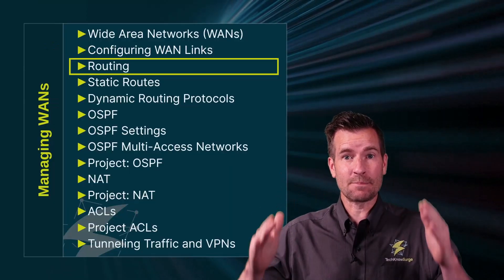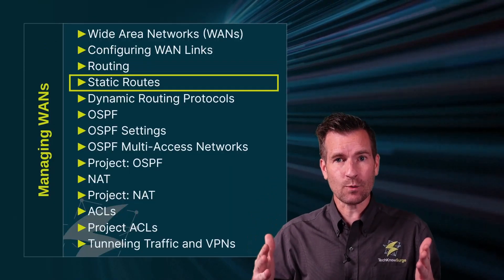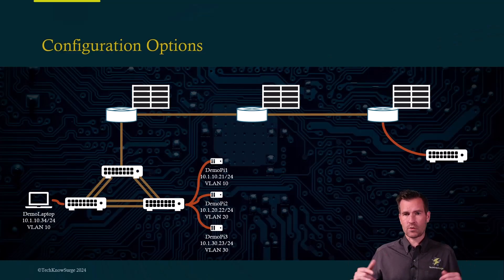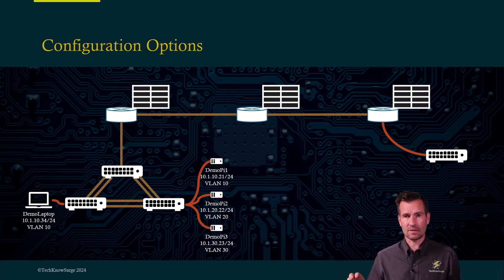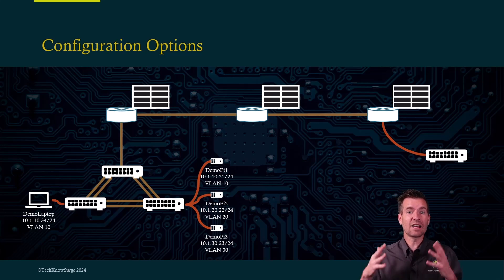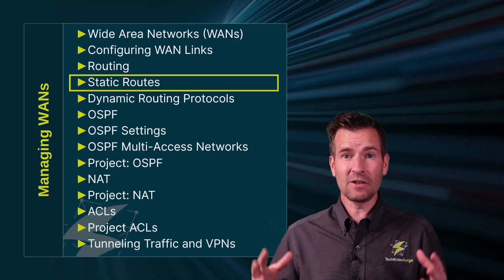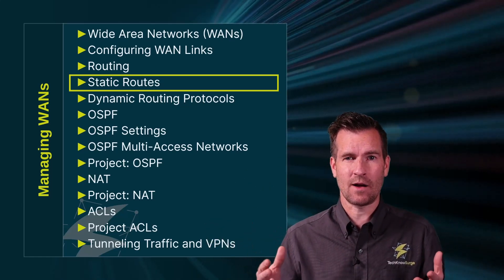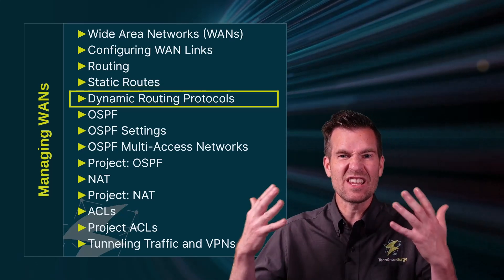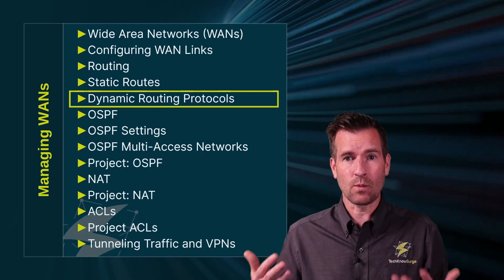Once we have a great concept of what routing looks like, we're going to move into creating static routes and configuring communication across our network using them. For our larger networks, we probably wouldn't use static routes as our primary method. However, even on larger networks using a dynamic routing protocol, we'd probably still want to install at least some static routes. So we're going to look at a lot of different types of static routes and how to configure them, and we'll see how we can have a fully functioning enterprise network set up with just static routes.